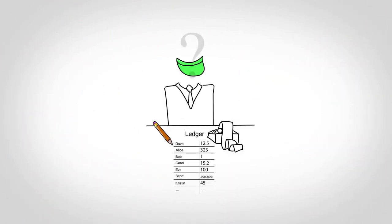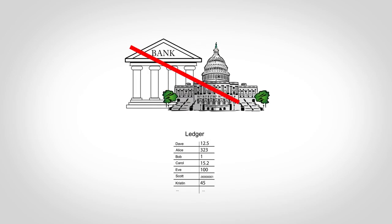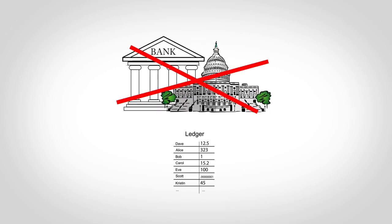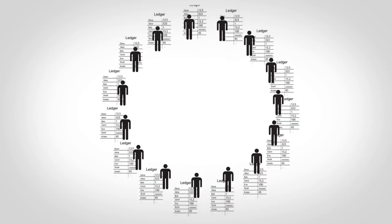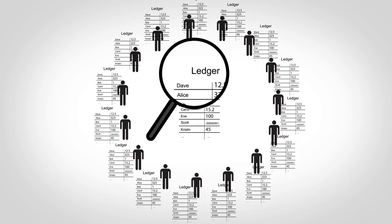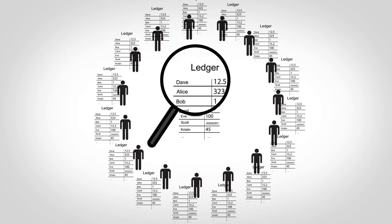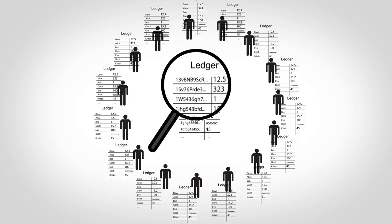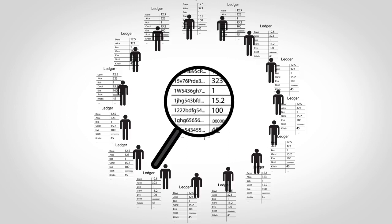So who maintains this ledger and makes sure no one cheats? One goal of Bitcoin is to avoid any centralized control, so every participant maintains their own copy of the ledger. One surprising consequence of this is that everyone can see everyone else's balances, although the real system only uses account numbers and not names, so there's some level of anonymity.